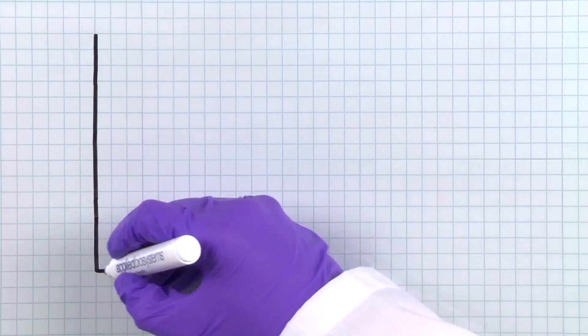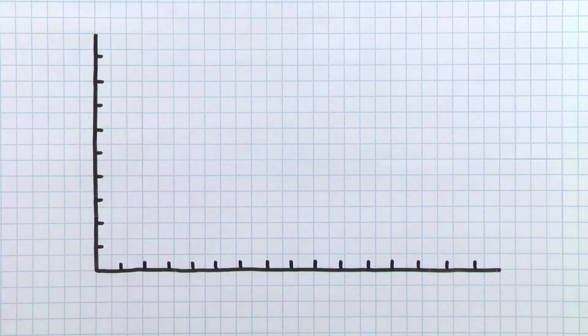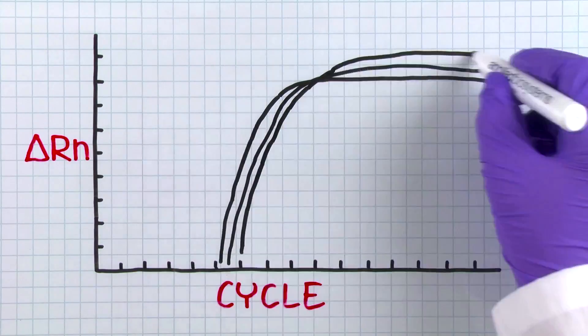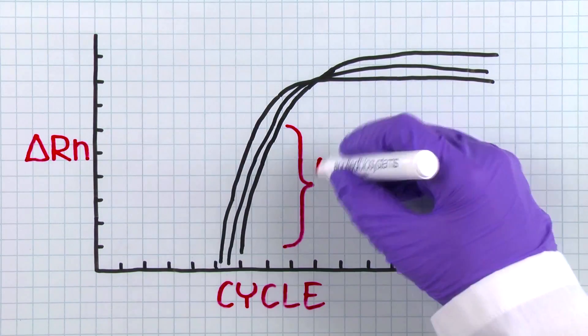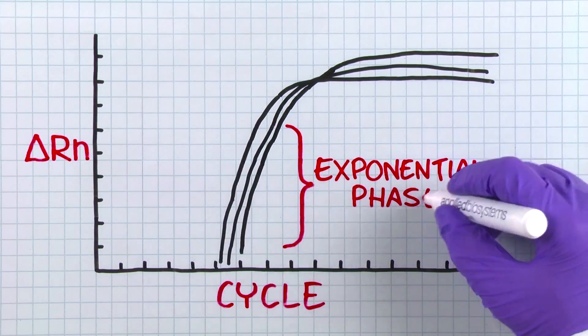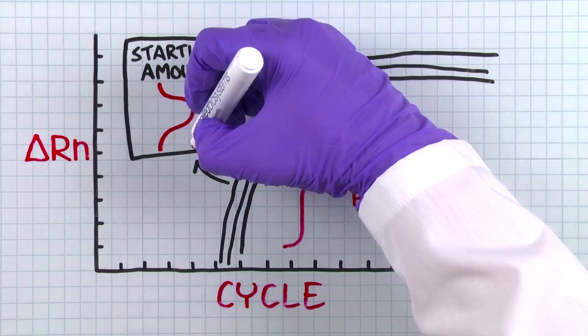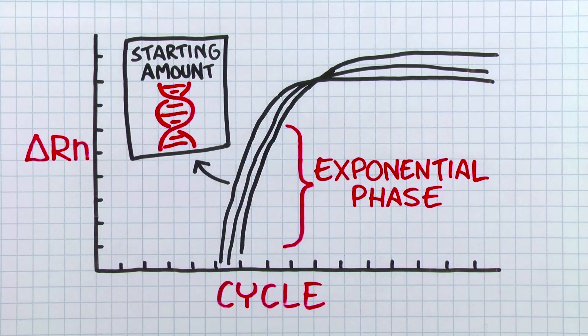Let's take a look at our lab book. The increased dye signal is in direct proportion to the number of PCR products. By collecting this fluorescent signal during the exponential phase of the reaction, we're able to obtain quantitative information on the starting amount of the DNA target.